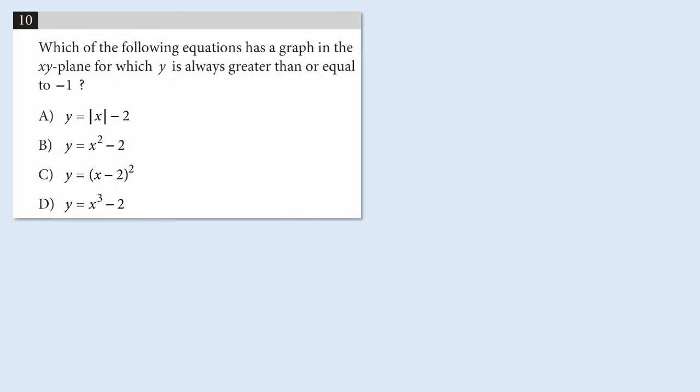This multiple choice problem comes from the College Board and it's from section three of the SAT test. That's the section that does not allow calculators. And it says, which of the following equations has a graph in the XY plane for which Y is always greater than or equal to negative one? And you have four choices.